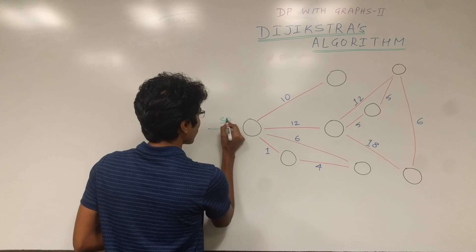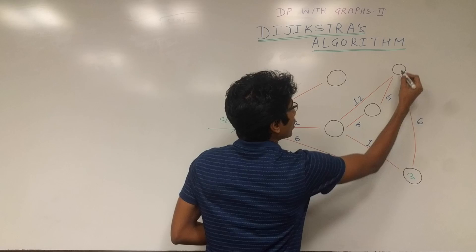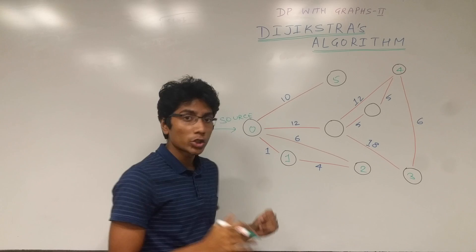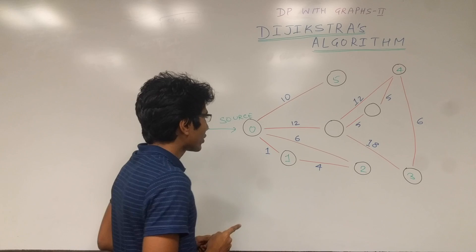So the algorithm goes like this: you have a source node, and you want to find all the shortest paths to all the destination nodes. So this is node 1, node 2, node 3, node 4, and node 5. From node 0 you want to find the shortest paths to all other destinations. Let's talk about the algorithm first, then we'll talk about the proof.